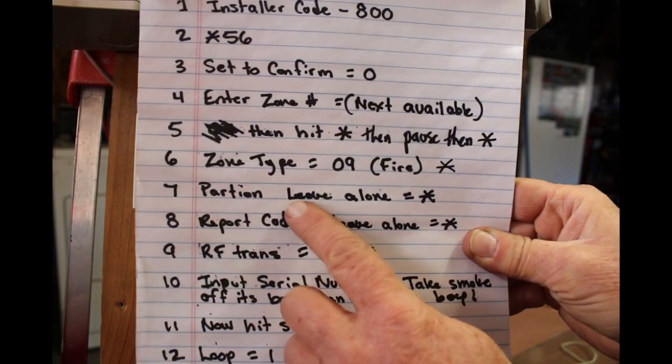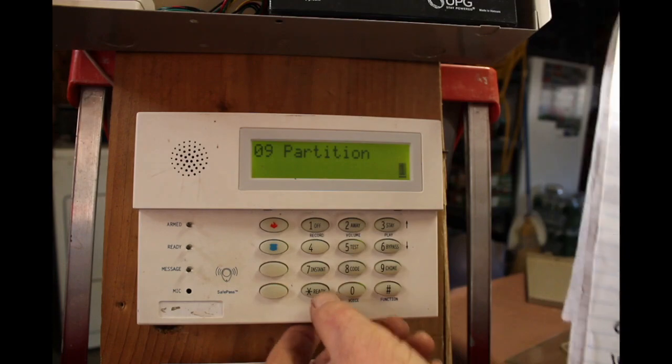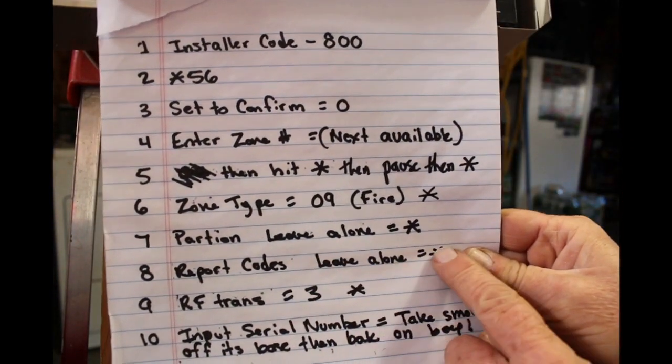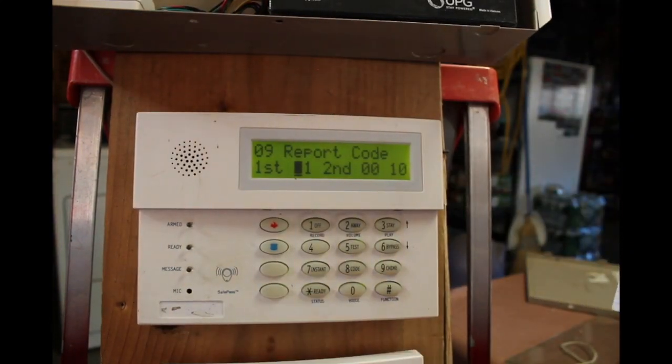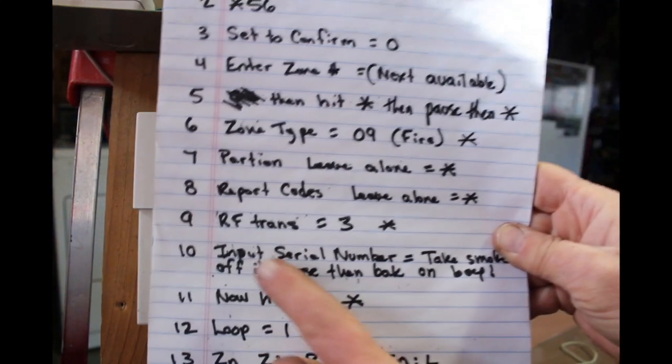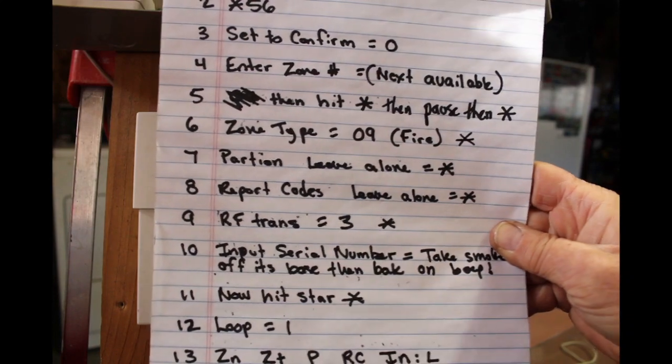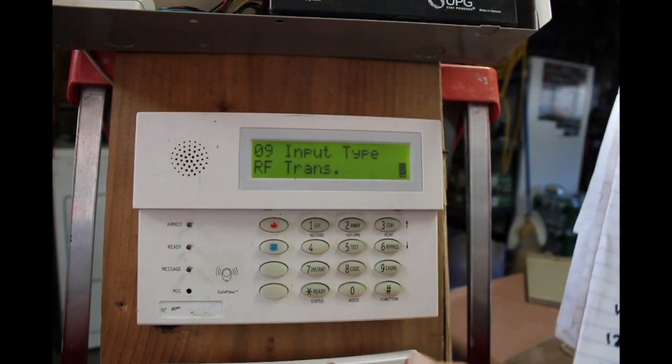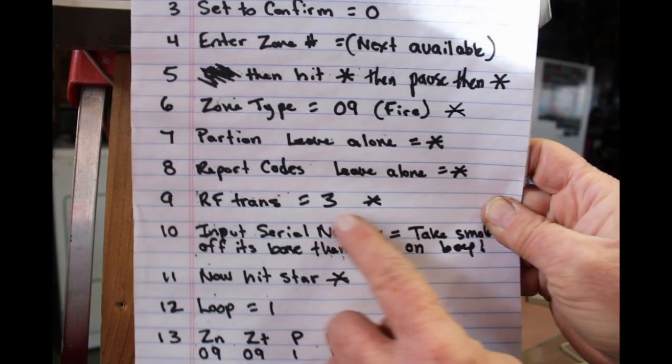Partition: it says leave it alone, hit star. Report code: report code, leave it alone, hit star. All right, RF trans is three, so if it isn't three just hit three and then hit star.